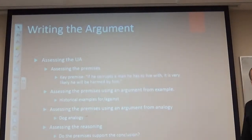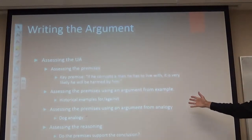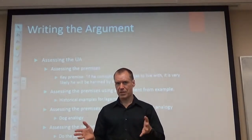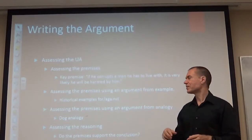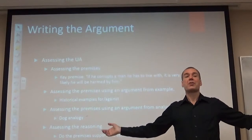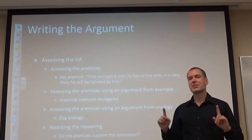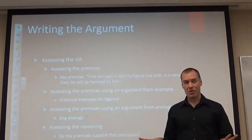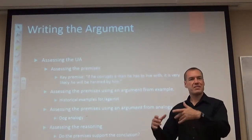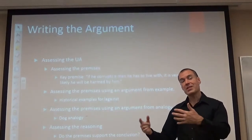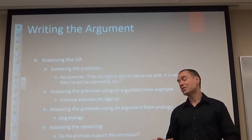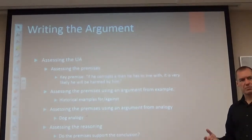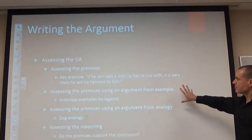The main battle is over the key premise. Socrates argues that if he corrupts someone he has to live with, he'll very likely be harmed. So the core of his argument is that since he knows that, he would not intentionally corrupt the youth. A common mistake is thinking Socrates argues 'they're not hurting me so I didn't corrupt them.' What he actually argues is: if he did corrupt them, they would probably hurt him; he knows better, so either he didn't corrupt them at all, or he did so unintentionally. The key battle is over this premise.